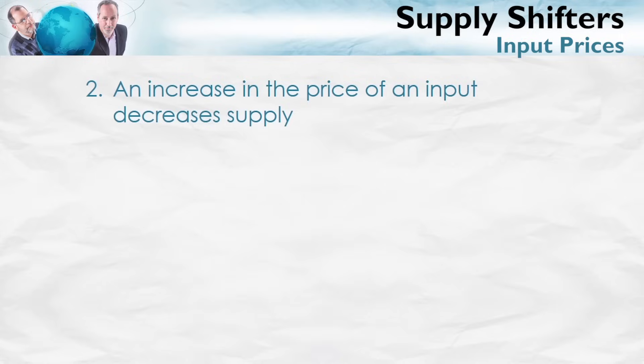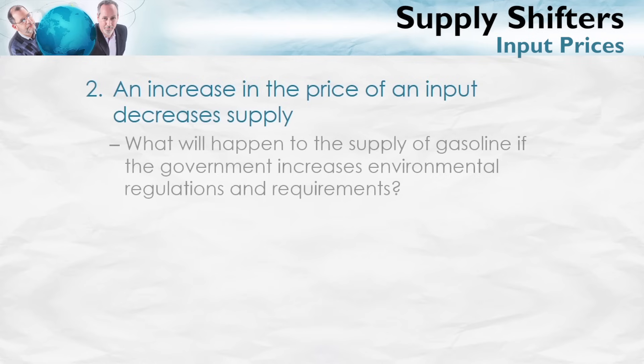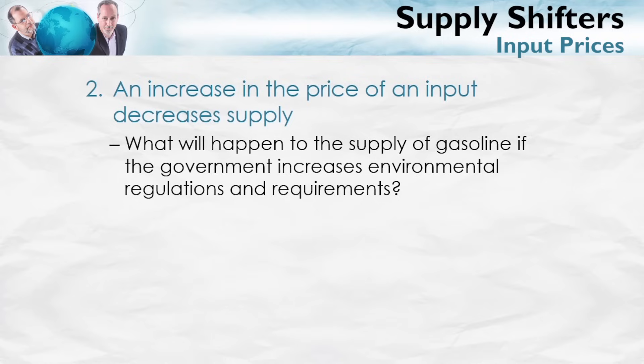Let's look at another important supply shifter: changes in input prices. And let's do a decrease in supply. An increase in the price of an input will decrease supply. For example, if the government were to increase environmental regulations and requirements on gasoline, that's going to cause a decrease in supply. It doesn't mean the government shouldn't do that — maybe it's worthwhile — but that will be the effect on supply.